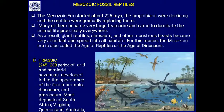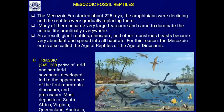The Mesozoic era started about 220 million years ago. During that period, amphibians started declining and their place was replaced by reptiles. Large, fearsome reptiles belonging to class Reptilia walked the earth, exploring every habitat. As a result, giant reptiles — the dinosaurs and other monstrous beasts — became very abundant and spread into all habitats.